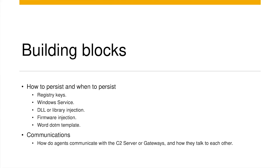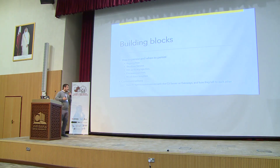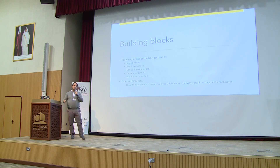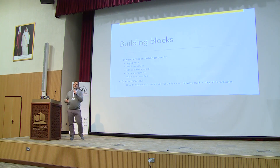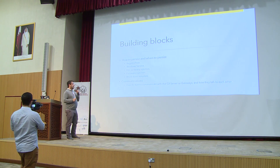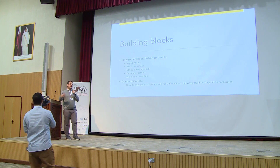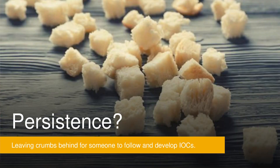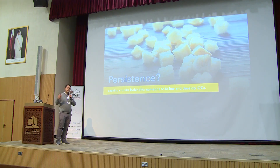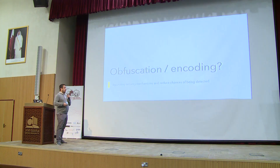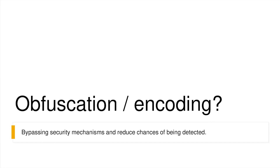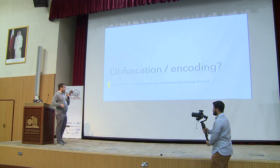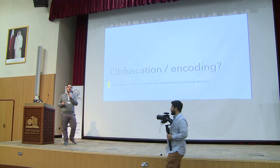When we talk about persistence, we need to know how to persist and when to persist. How can a binary persist in your environment? It's done through registry keys, Windows services. You can use library injection like DLL, Python libraries, or .NET libraries. You can inject yourself in the firmware, but also you can use Word templates, Excel macros, and so on. One important thing is communications — how do these agents communicate back to your C2 environment, with the gateway, or with each other? The moment we have persistence, we are leaving breadcrumbs for vendors to detect us. So we use obfuscation and encoding to protect our binary or our agent, which reduces the chances of being detected by typical endpoint systems.